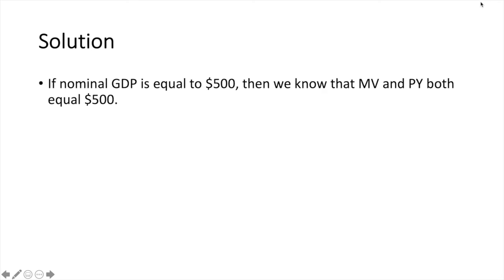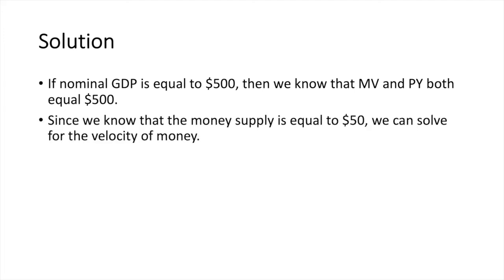If nominal GDP is equal to $500, then we know that MV and PY both equal $500. Since we know that the money supply is equal to $50, we can solve for the velocity of money. $50 times V equals $500, which means V equals $500 divided by $50, or 10.